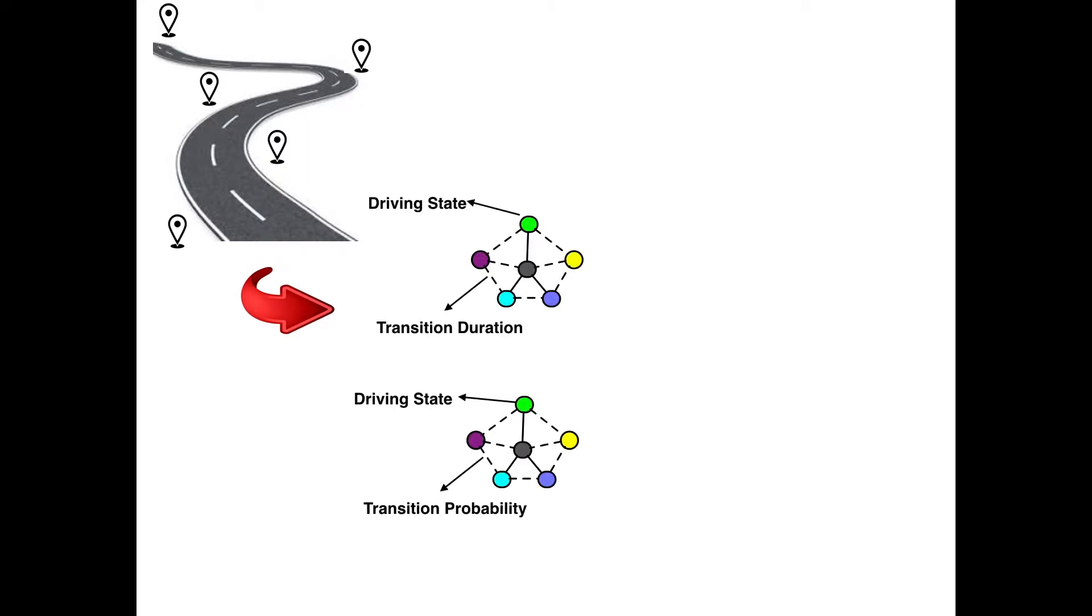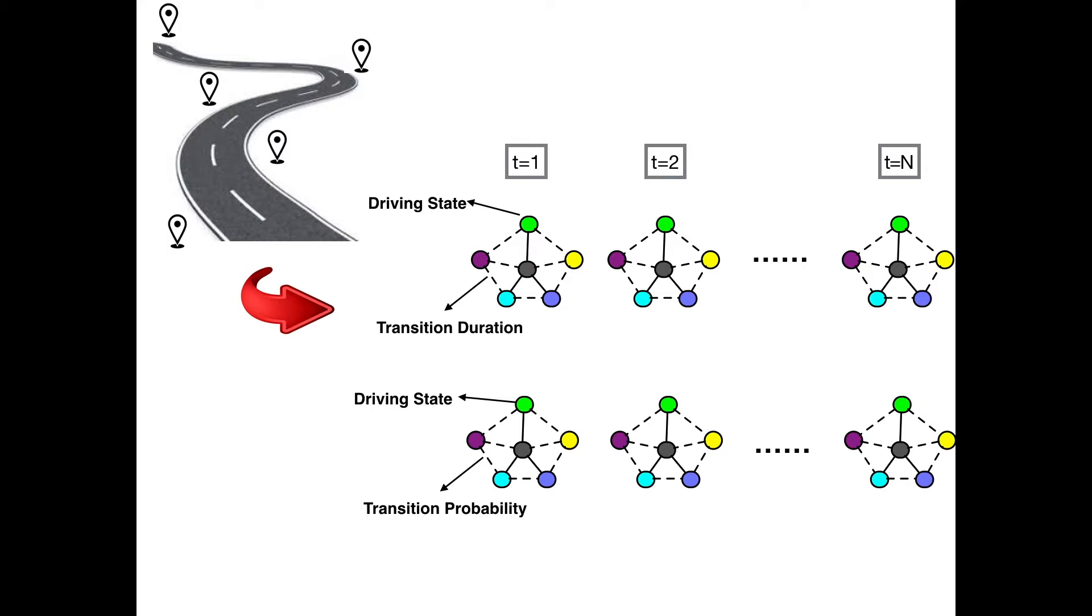To solve this problem, we analyze driving behavior as a sequence of state transition graphs, where the nodes are driving states and edges are transition durations or probabilities. For each time window, we construct a driving state transition graph, then we will have transition sequences for each driver.